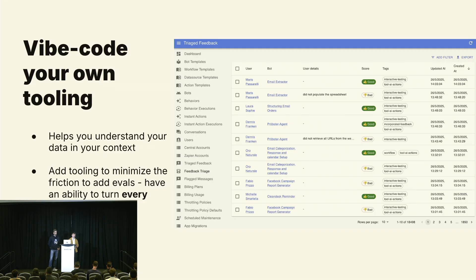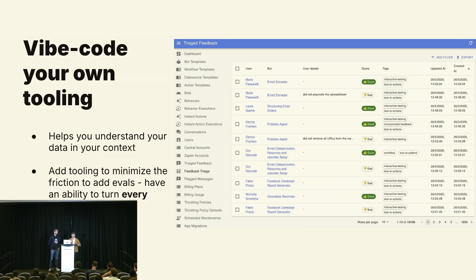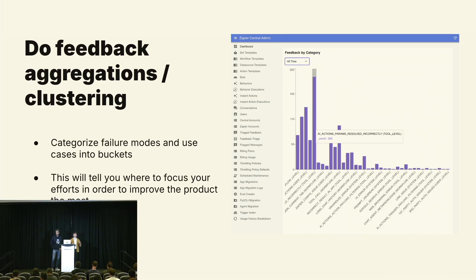Building your own internal tooling is really easy right now with Cursor and Claude Code, and it's going to pay massive dividends for two reasons. First, it gives you the ability to understand your data in your own specific domain context. Second, you should be able to create functionality to turn every single interesting case or every failure into an eval with minimal friction — there should be a one-click way to turn it into an eval. It should become your instinct. Once you understand individual runs, you can start understanding things at scale: feedback aggregations, clustering, bucketing failure modes and interactions. This will almost create an automatic roadmap, showing you where to apply time and effort.